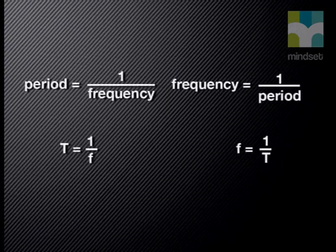Mathematically, scientists write this relationship as period is one over frequency, while frequency is one over period, or T is equal to one over f, and f is one over T.